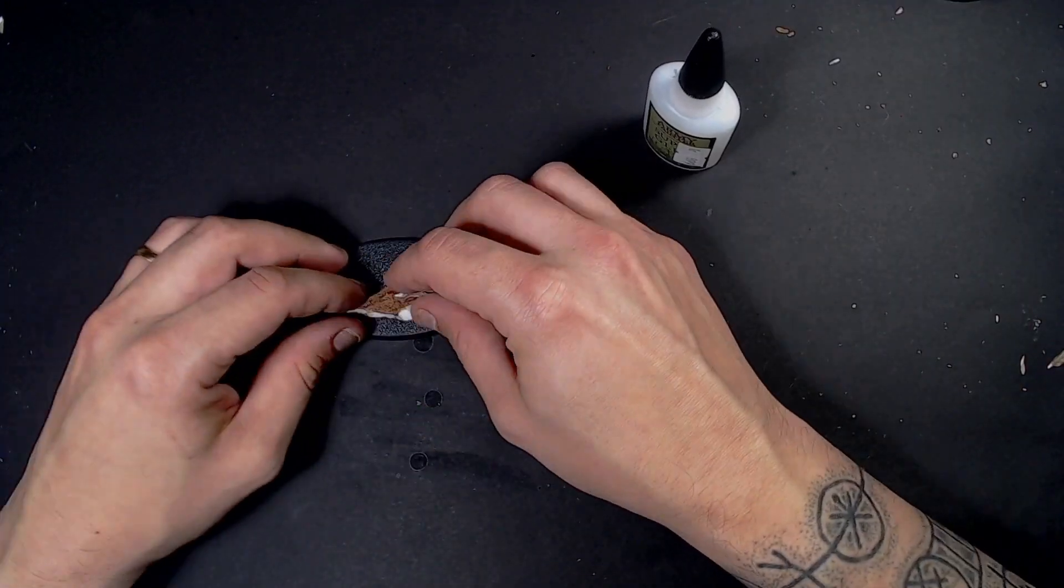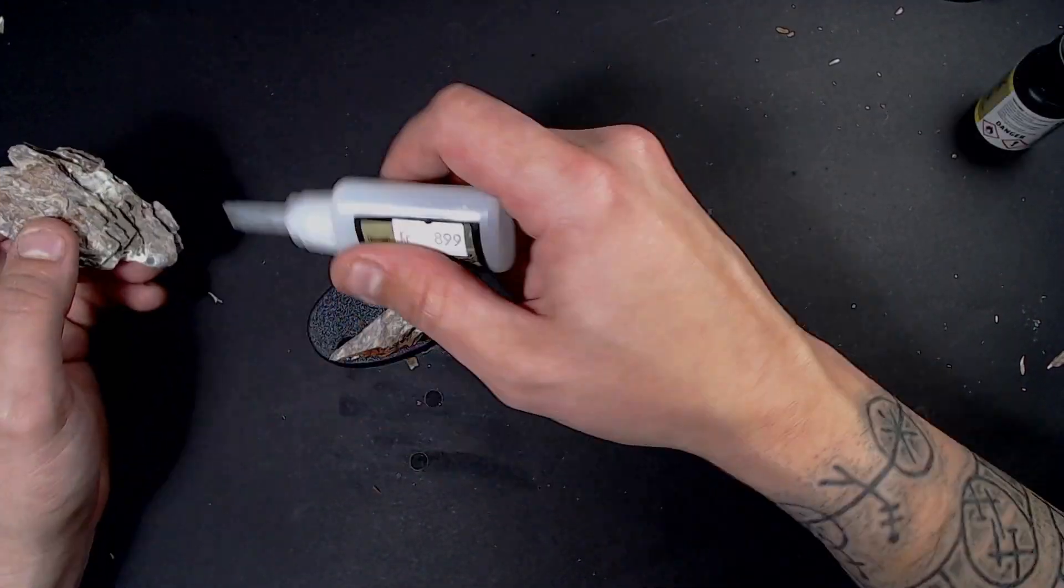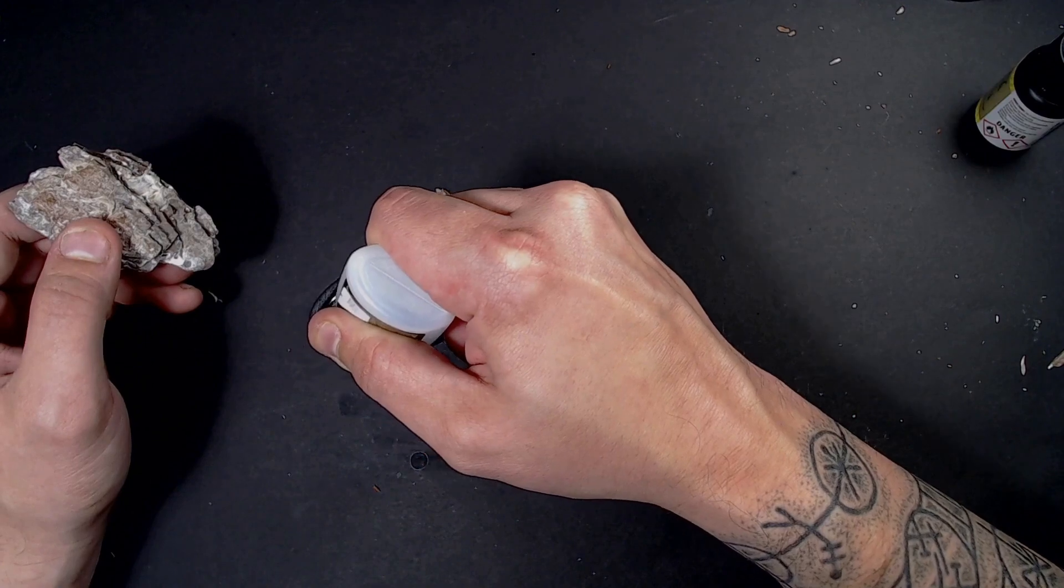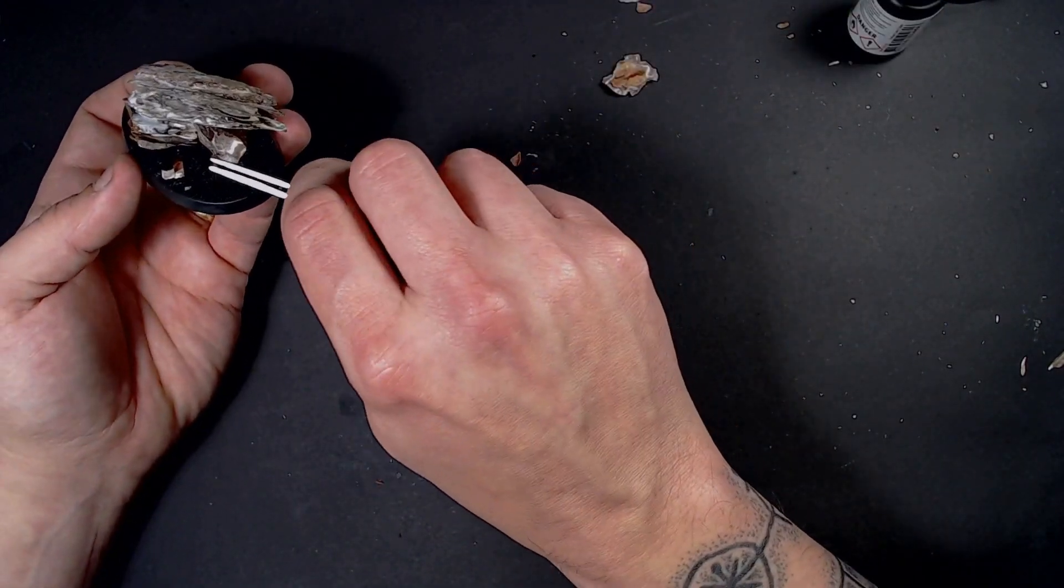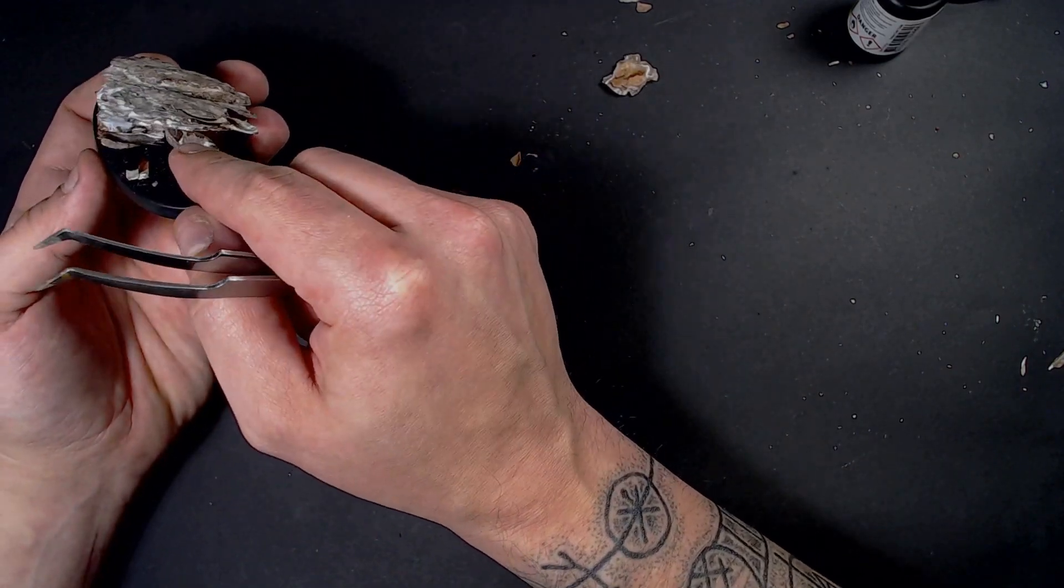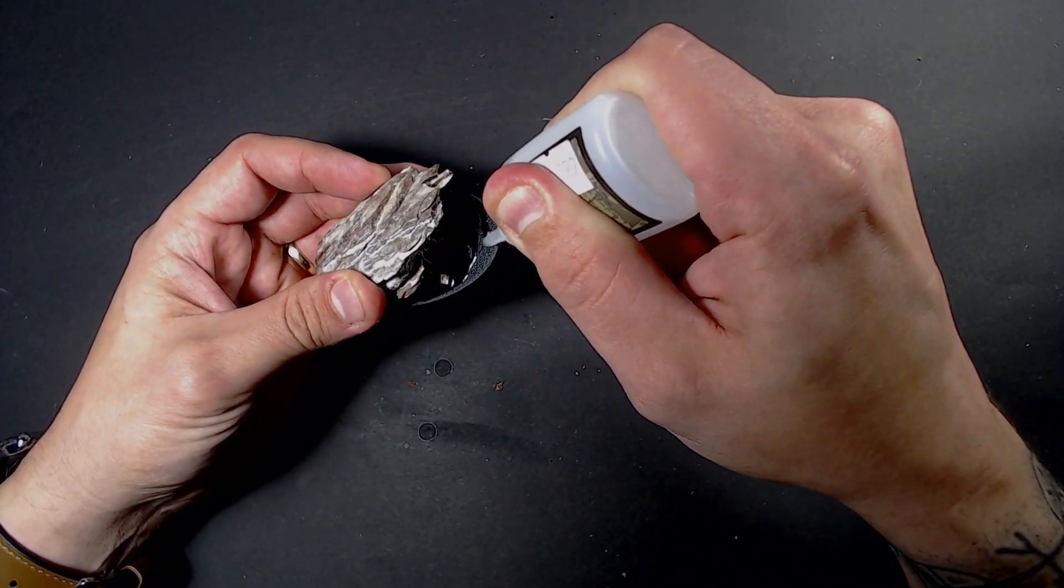The first base we're going to start out with is more of a fantasy themed base. We're going to do a cavalry base or a mounted hero type base with some rocky outcroppings and generally just a fun and easy build. We start out by just gluing a little bit of bark here and there on an oval base.